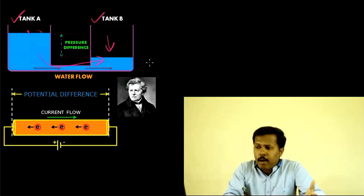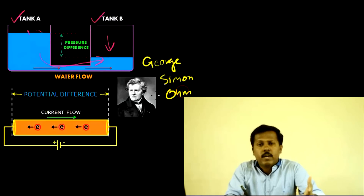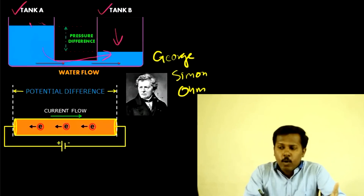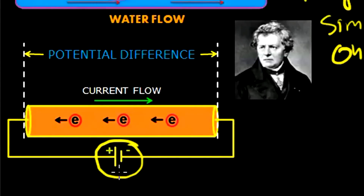A similar situation is present in electronic circuits also. This was first observed by Georg Simon Ohm, a German physicist. He observed that in any conductor, if you provide a potential difference — here you can see a battery is connected to provide that potential difference — the electrons will flow through the conductor.